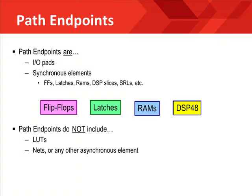All synchronous elements have a clock port. Path endpoints do not include LUTs, NETs, or any other purely asynchronous element — basically anything without a clock port. Most new designers would expect LUTs to be a path endpoint, but they are a purely asynchronous element. However, if a LUT is reconfigured as a RAM or a shift register LUT, it uses a clock port, becomes synchronous, and at that point can be a path endpoint.